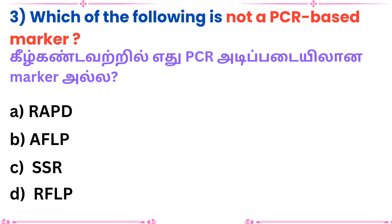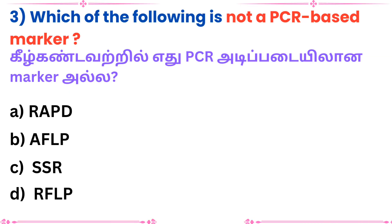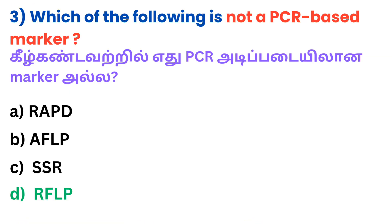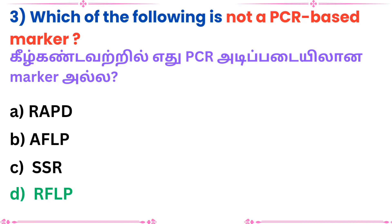Question 3: Which of the following is not a PCR based marker? Answer: RFLP.